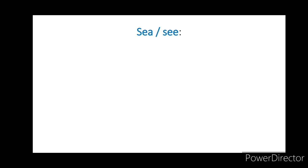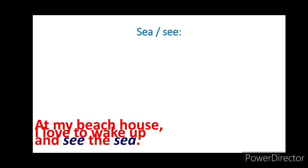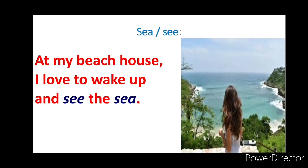Now let's see some more examples of homophones. S-E-A is 'sea' and S-E-E is 'see'. Example sentence: At my beach house, I love to wake up and see the sea. Here, S-E-E means to look at things, whereas S-E-A means a large water body.